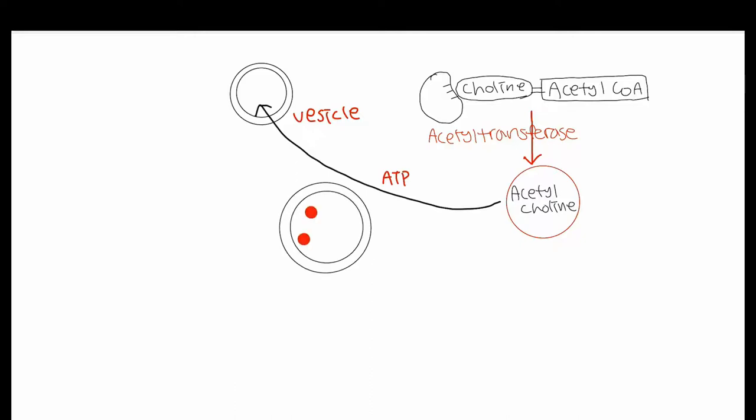After acetylcholine is packaged into vesicles, it is stored at the nerve ending until an action potential arrives and allows for its release into the synaptic cleft. Now, on to the triggering of neurotransmitter release.